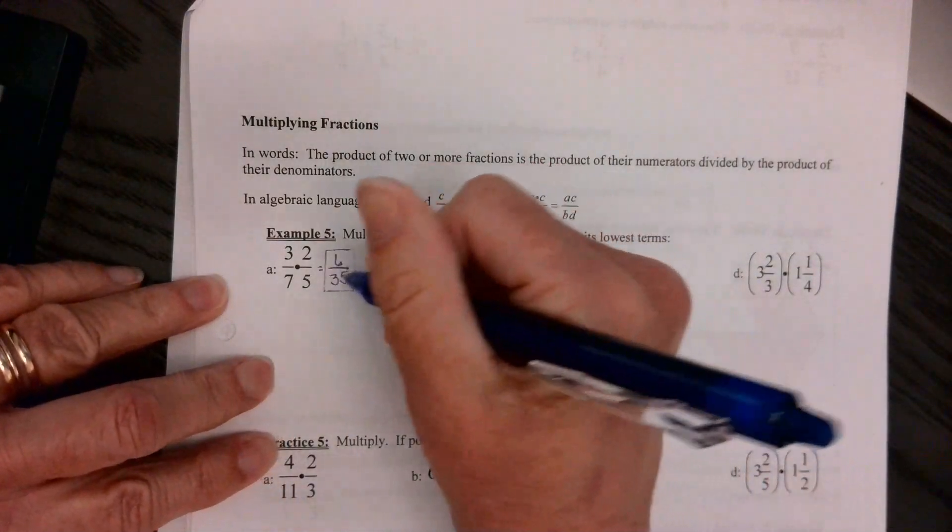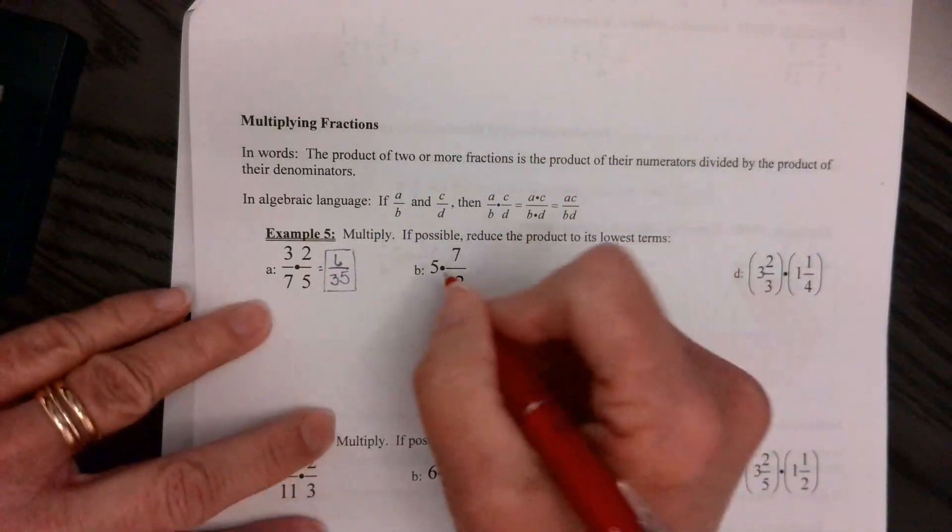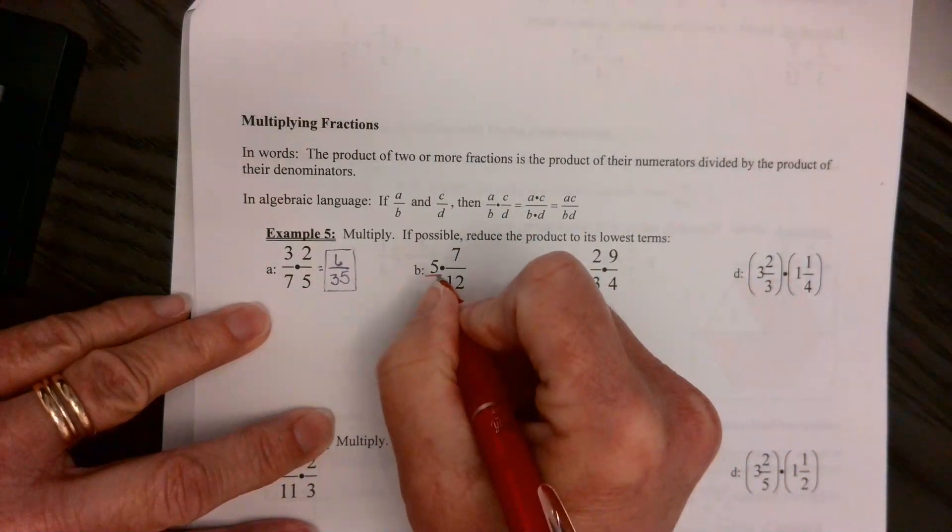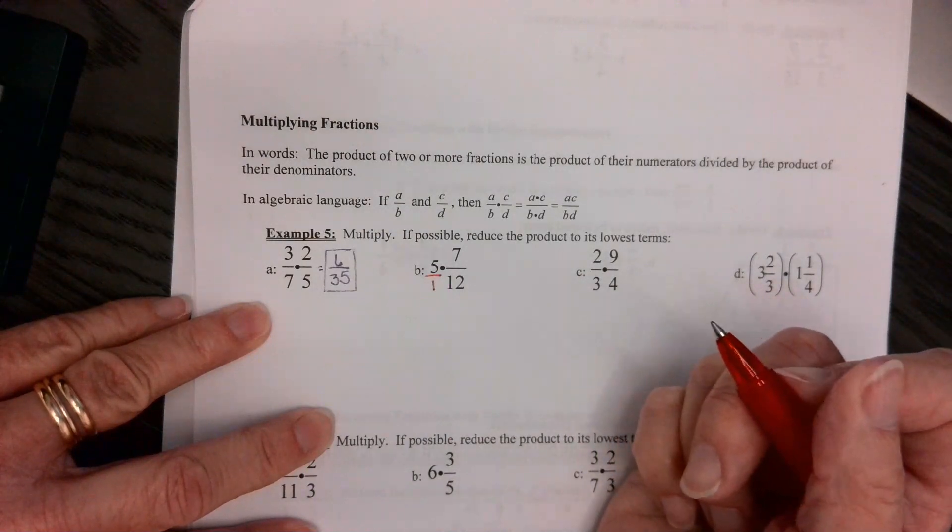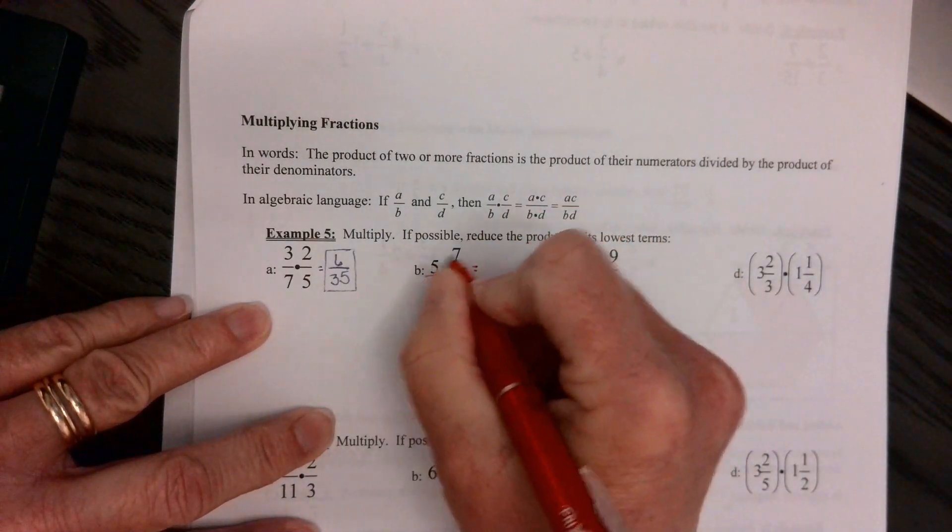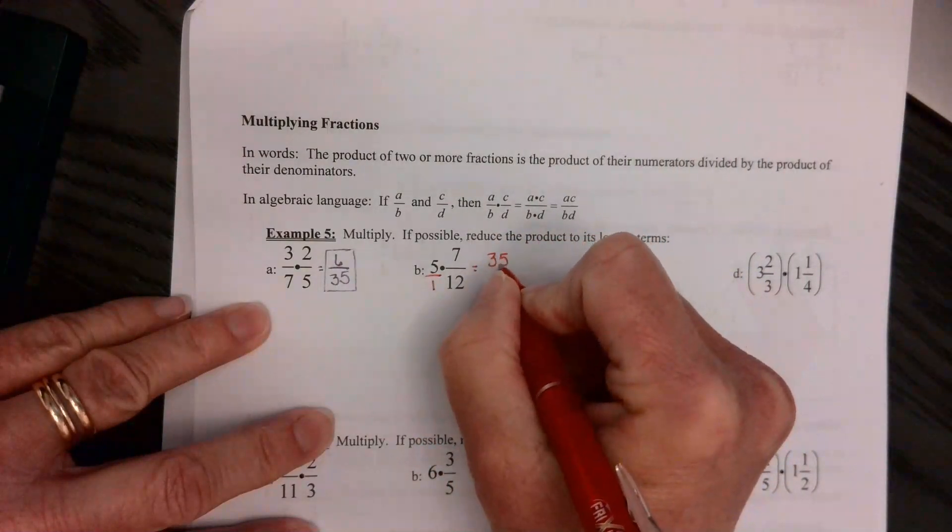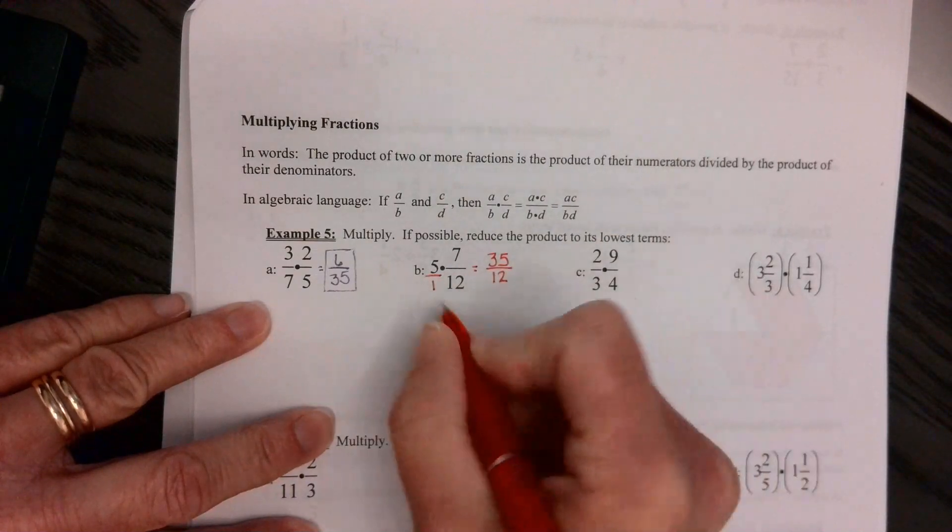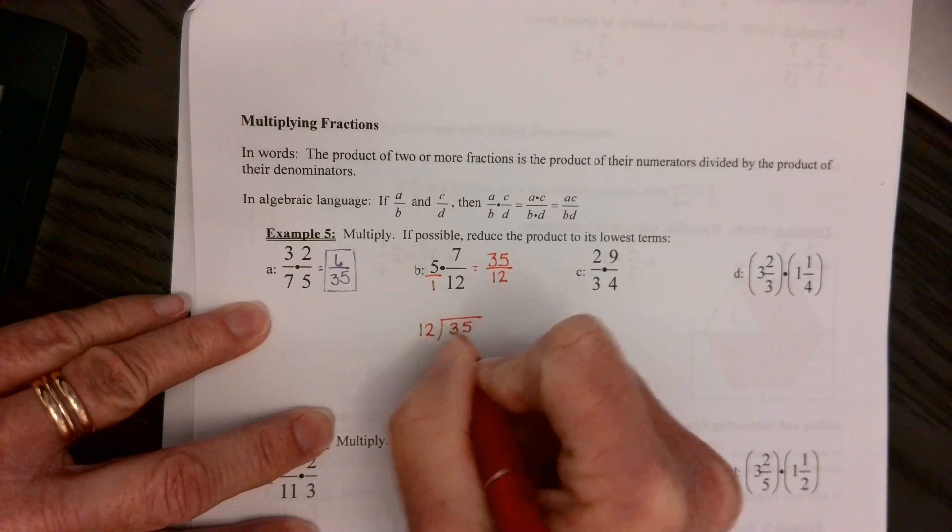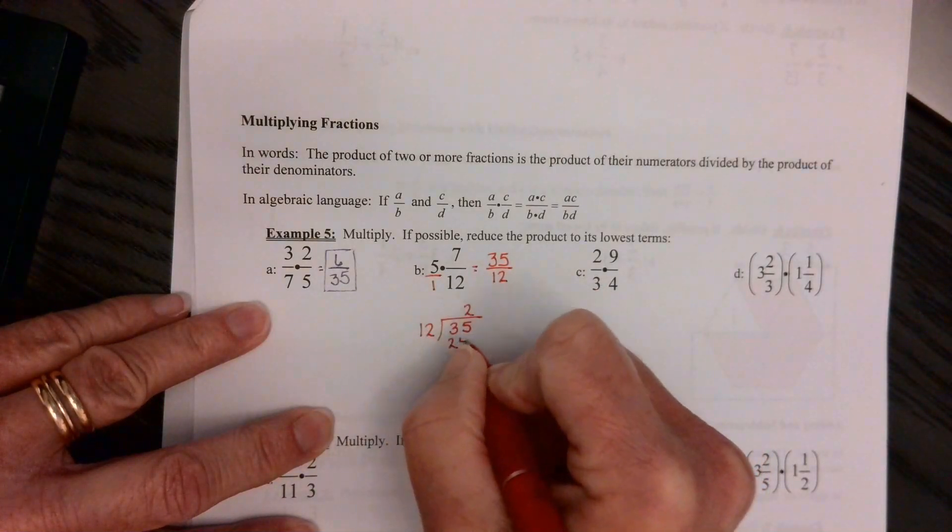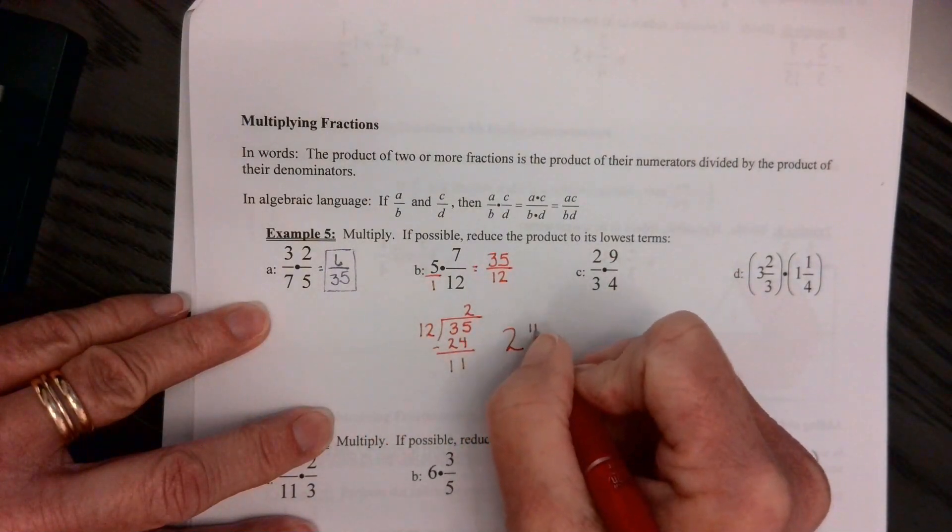And my pen is running out, so I'm going to have to switch to my red one. Okay, this one right here, this really has a 1 under it. When you have a whole number, it has a denominator, we just don't write it. It's 1, though. We're going to multiply the numerators. 5 times 7 is 35, and 1 times 12 is 12. Improper fraction, we've got to change it to a mixed numeral. 12 goes into 35 two times, we get 24. Subtract and get 11. So we have 2 and 11/12.